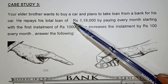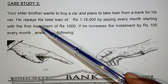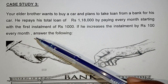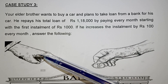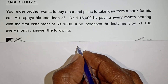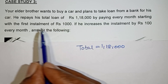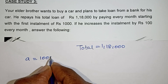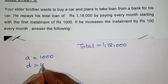Your elder brother wants to buy a car and plans to take a loan from a bank. He repays his total loan of 1 lakh 18,000 by paying every month, starting with the first installment of 1000 rupees. If he increases the installment by 100 rupees every month. The total repay amount is 1 lakh 18,000, the first installment is taken as the first term A = 1000, and the common difference D = 100 rupees.